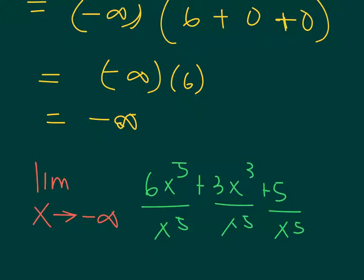But if you will be careless, so you divide, this becomes x squared and 5 over x to the 5. You will think that this will be 6 plus 0 plus 0, and your answer will be 6, which is wrong.